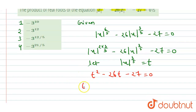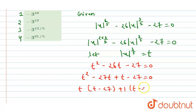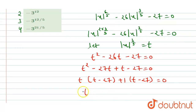On further solving t² - 26t - 27 = 0, we split the middle term to get t² - 27t + t - 27 = 0. Taking common factors: t(t - 27) + 1(t - 27) = 0, which gives us (t + 1)(t - 27) = 0.